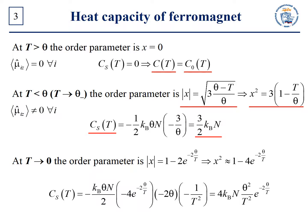At T tending to zero, the order parameter has the following form. Thus, we know x squared. In this case, the expression for Cs has the following form. Therefore, Cs(T) exponentially tends to zero as T tends to zero.